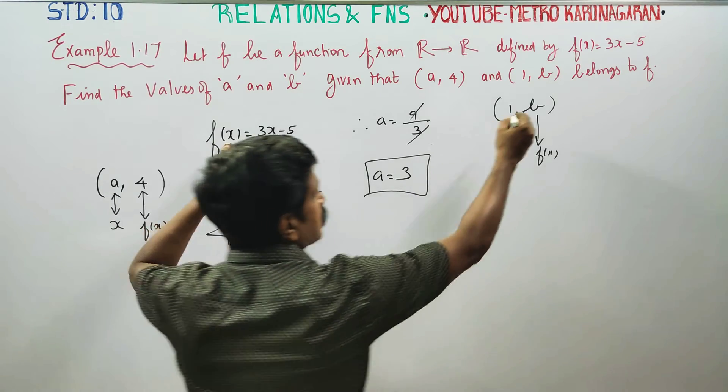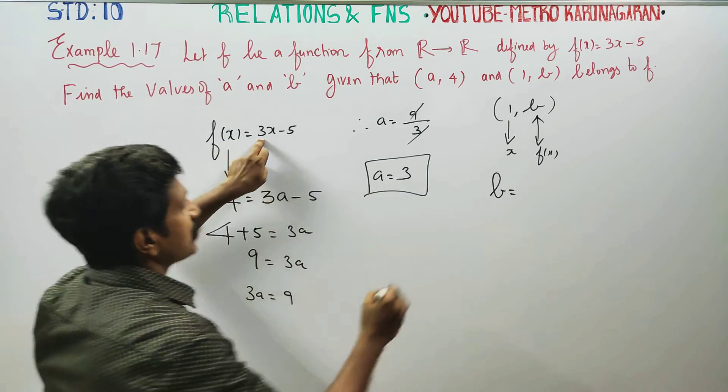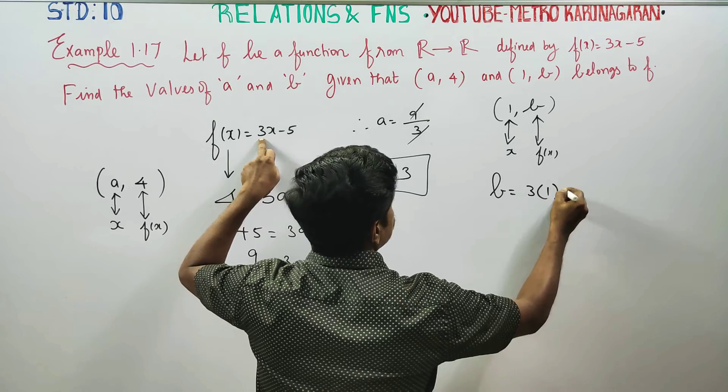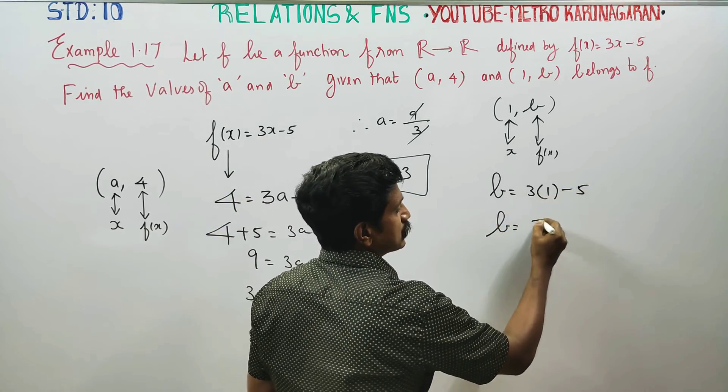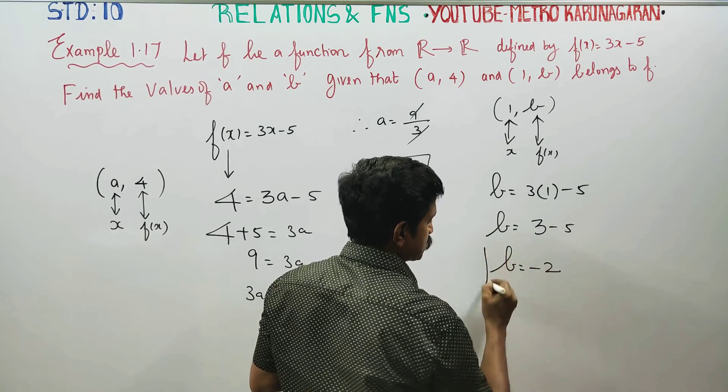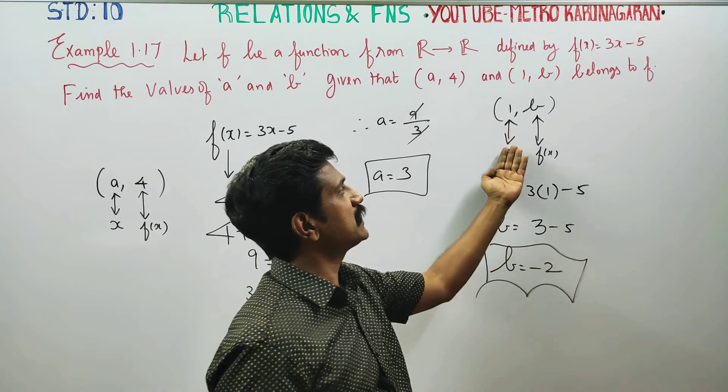f(x), you can use B is equal to 3 into x, you can use 1, minus 5. B is equal to 3 minus 5. B is equal to minus 2 will be your answer.